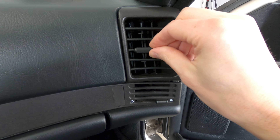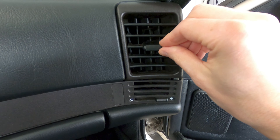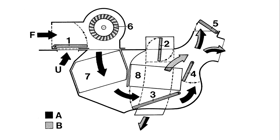Each side vent features an open and closed switch at the bottom, where open is to the left and closed is to the right. The center vents have a similar switch that is vertically oriented, where down is open and up is closed. When the switch is in the closed position, the ventilation flap diverts additional air to the windshield vents because of their shared airflow pathway.